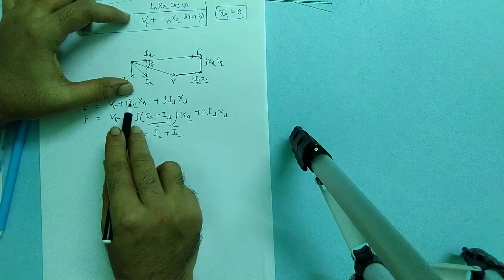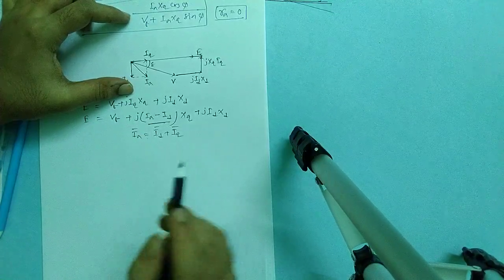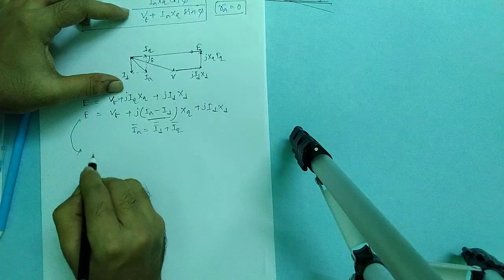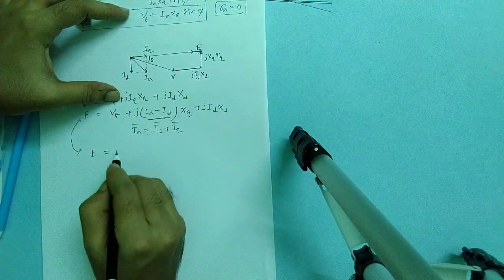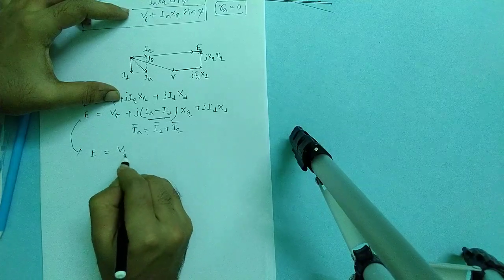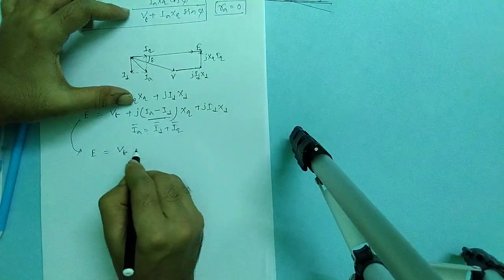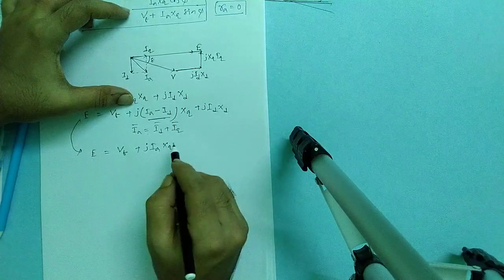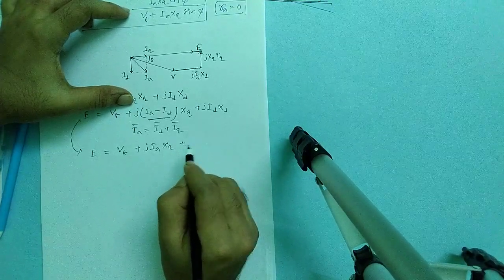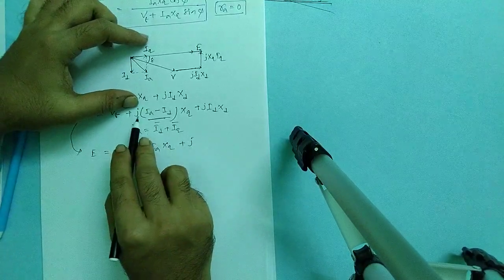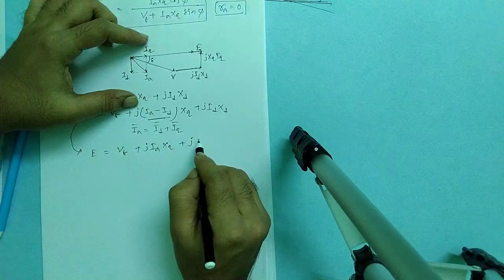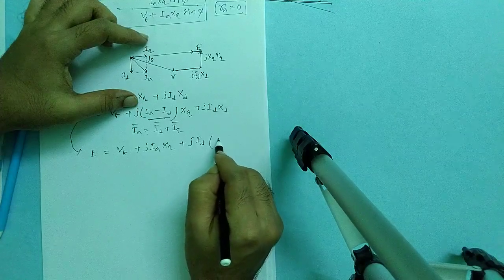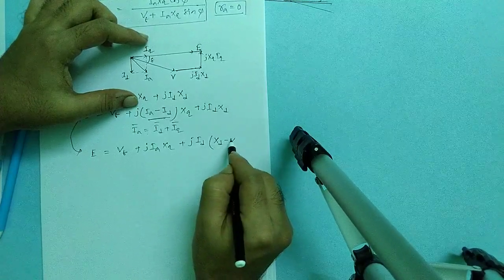So i_d, for i_q, i_q will be i_a minus i_d. Is it okay? From here we can write it as E is terminal voltage plus J of i_a X_q. So here we can write it as i_d into X_d minus X_q.